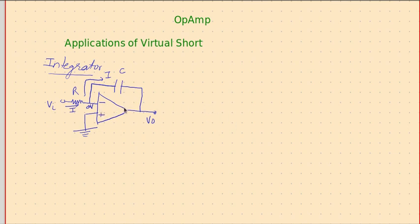The situation is the same as previous cases. There is a non-inverting input connected to ground voltage 0. Therefore, due to virtual short, this point voltage will be 0, and hence there is a potential difference of VI minus 0 across R. Therefore, a current I will be flowing: VI minus 0 by R, that is VI by R.